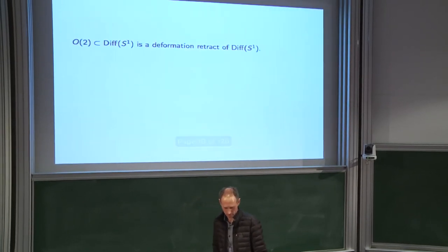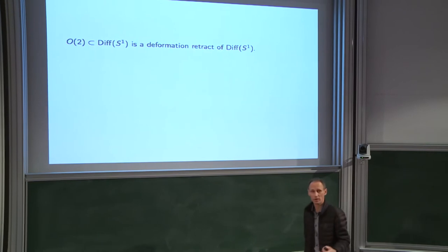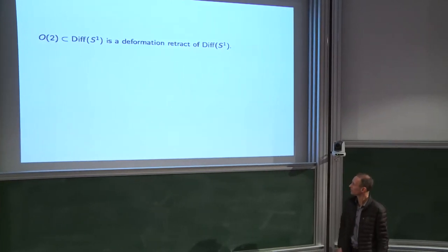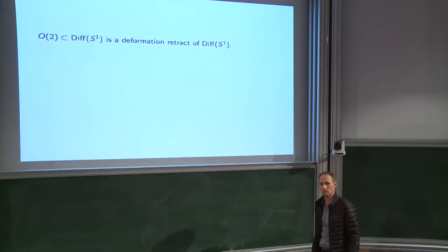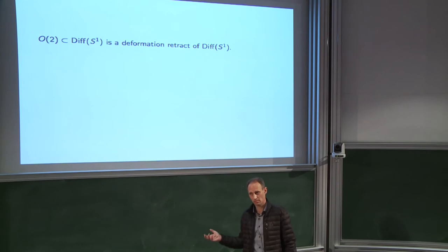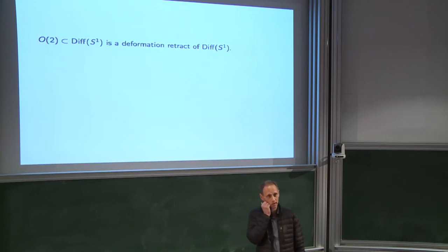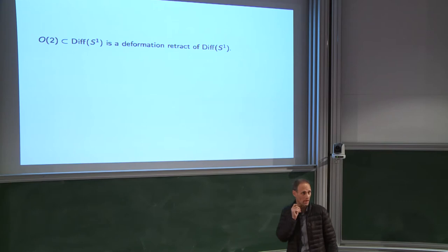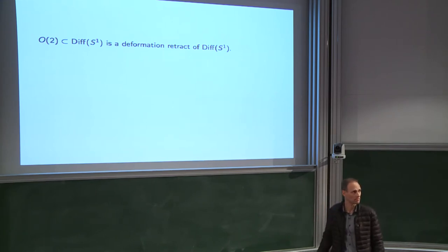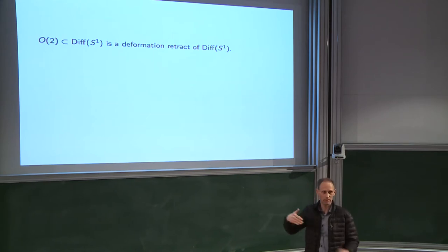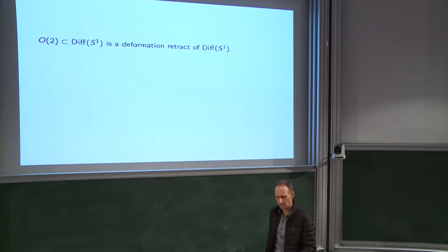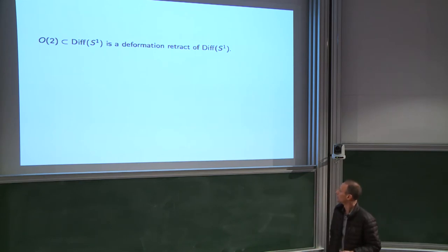Let's start with dimension 1. We're looking at the circle — there's not much going on there. You have O(2), the orthogonal group, acting on the unit circle. O(2) embeds in Diff(S¹) and this is a deformation retract. You can do this in any number of ways — apply a heat flow to deform a diffeomorphism to an isometry, or lift to the universal cover and use a straight line isotopy. It's fairly trivial.